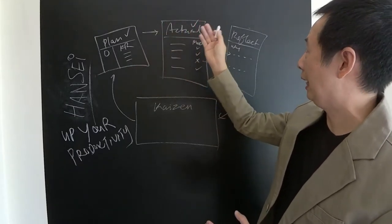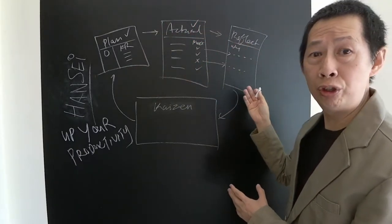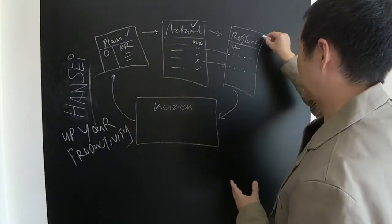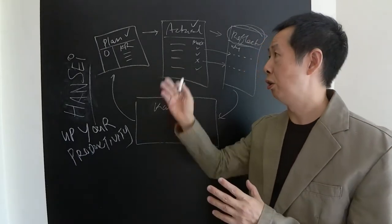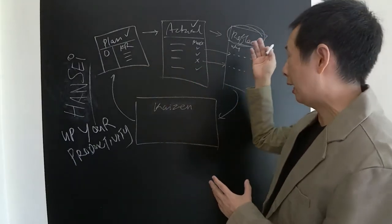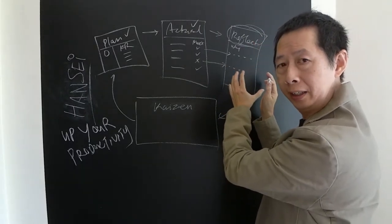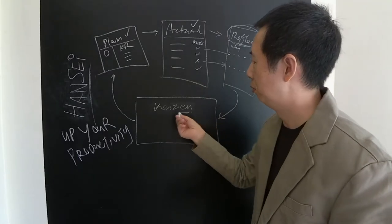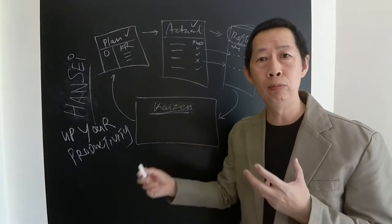Once you've compared plan versus actual, the next and most important step is Hansei — reflect. Do you reflect on why you're not meeting the plan? Understand the why, and don't get stuck there. Then move it to Kaizen, which means improvement.